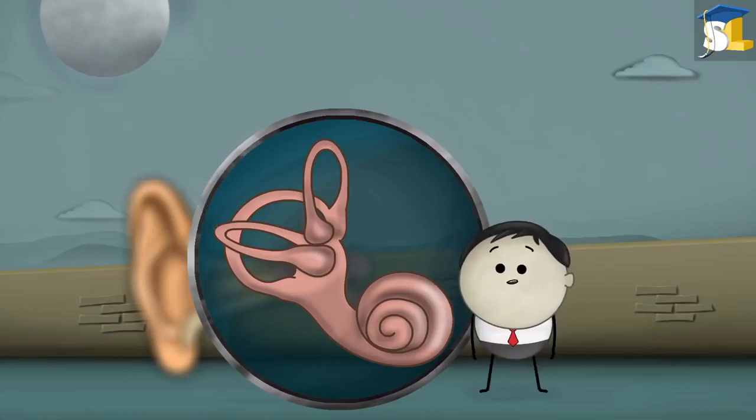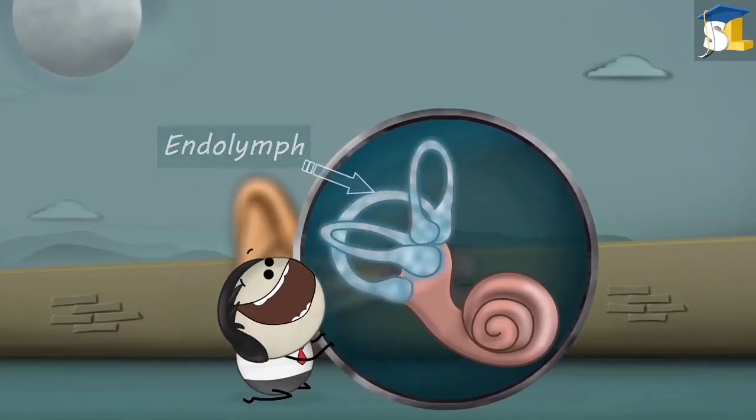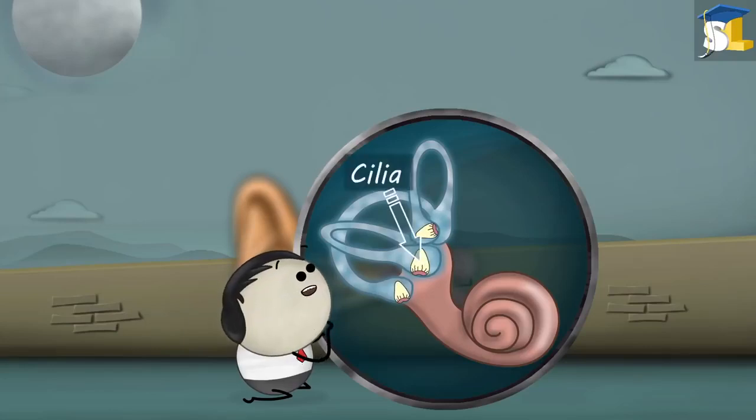The three semicircular canals are arranged in three different positions. Each of these canals has a fluid called endolymph and hair cells called cilia at the base.